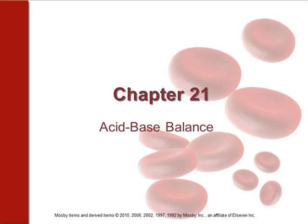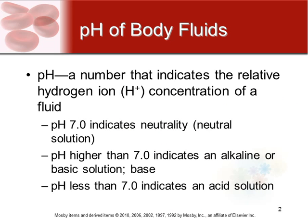Here we go with another nice short chapter — chapter 21, acid-base balance. Acid-base balance is really talking about pH. pH is a number we use to indicate the concentration of hydrogen ions in a fluid. A neutral pH would be 7, like water — water is an example of a perfect seven. Anything higher than seven is considered alkaline or basic.